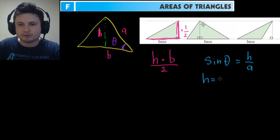h equals sine of theta multiplied by a. And in other words, you can now take this h here and replace it with this h here.